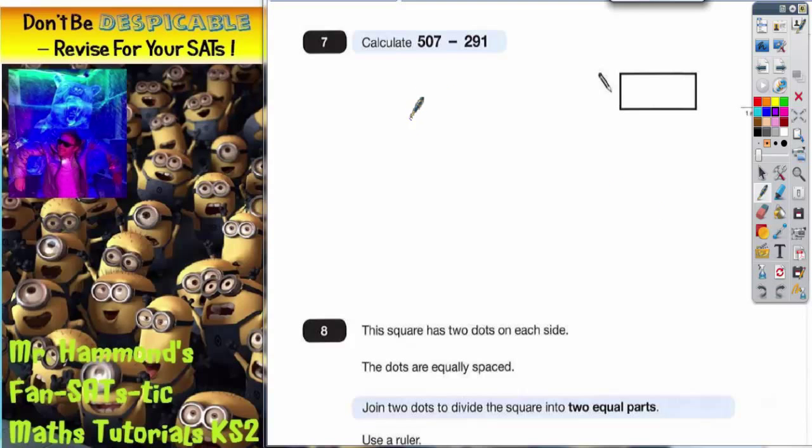Okay, question 7: calculate 507 subtract 291. If you get a question like this, it's like you've hit the jackpot, because by now you should be knowing your column methods. So make sure you set it out with all the columns with all the numbers lined up in the correct columns.